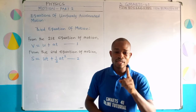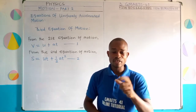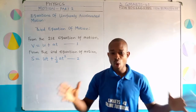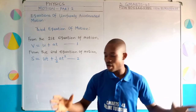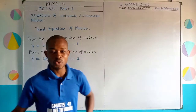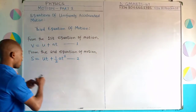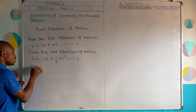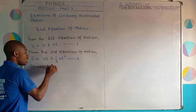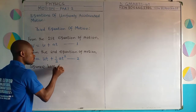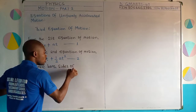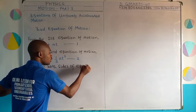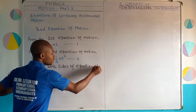We're going to start by using the first equation of motion, which is equation one. I shall square both sides of the equation — the left and the right hand side. So let me write that: square both sides of equation one.